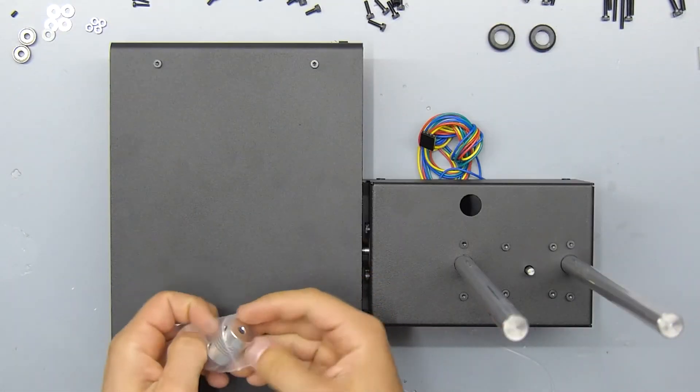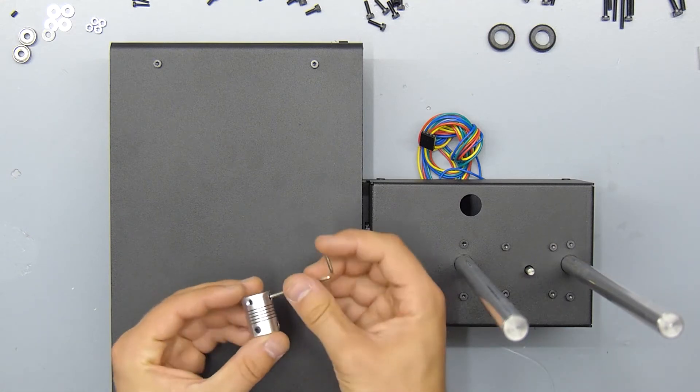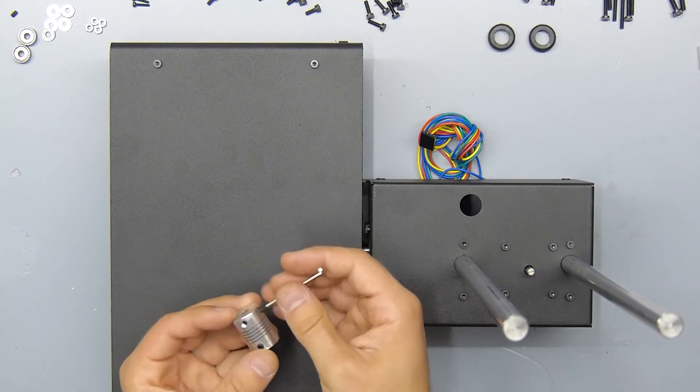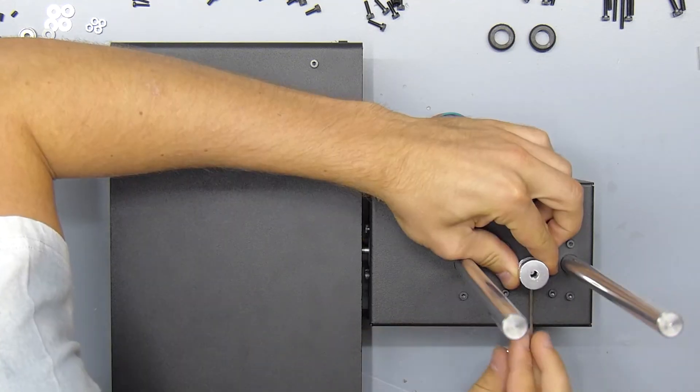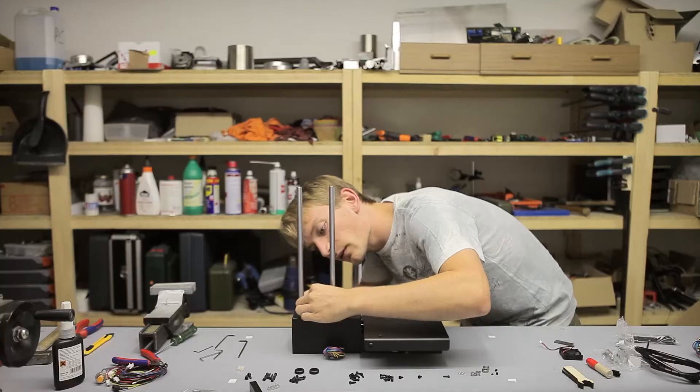Next up we're going to install the z-coupler. As with the pulleys, I'm going to remove one of the two grub screws on either side. At this point you should orient the motor shaft so that the flat side is pointing out to the side.